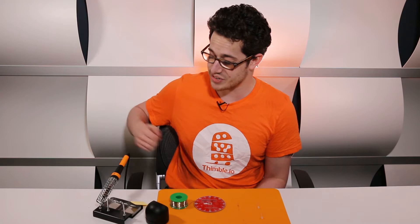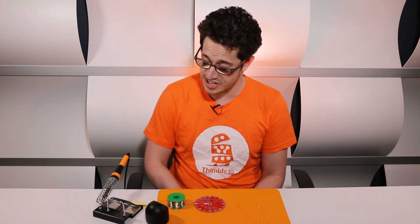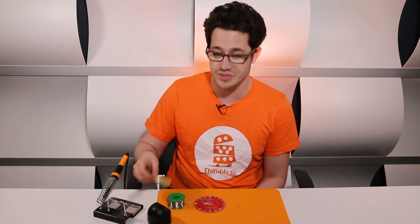First is a soldering iron, mine is already plugged in and hot. Some solder wire and then something to clean your soldering iron with. I have some brass sponge here but you can also use a wet sponge.